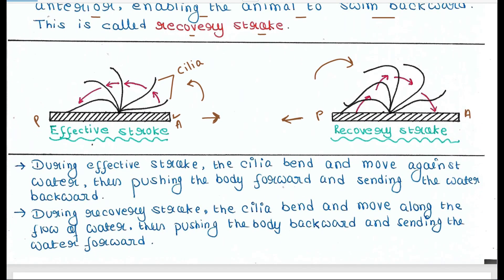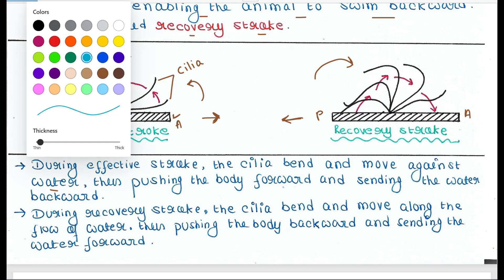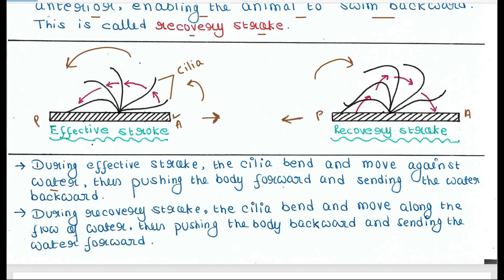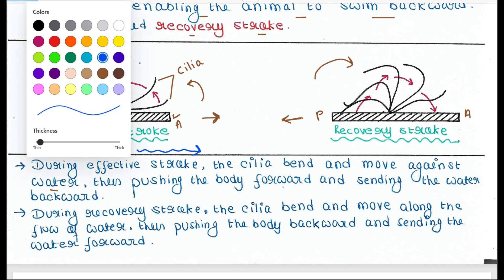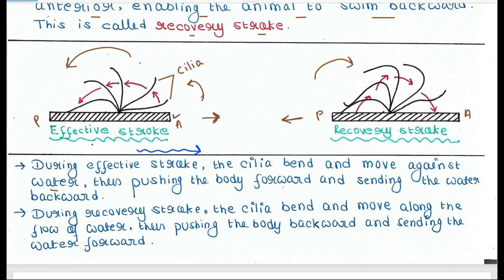During the effective stroke, the cilia bend and move against the water. The cilia are moving in the opposite direction to the water flow. Thus, it pushes the body forward and sends the water backwards.